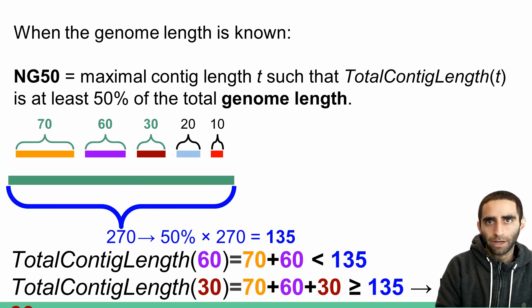Therefore, I'm done. I've succeeded. This means that the NG50 of this assembly would be 30. For this analysis, we will be using a tool called Quast to compute various quality metrics of our assembly.